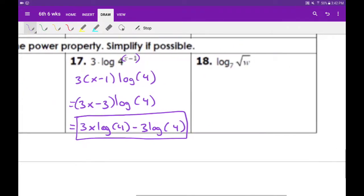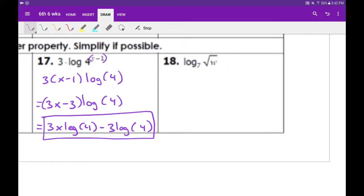Next one is the square root of w. So again, just rewrite this as log base 7 of w to the 1/2. Now we have a power, so I'm going to take this power and throw it in front of the log, so I get 1/2 log base 7 of w, and that's it.